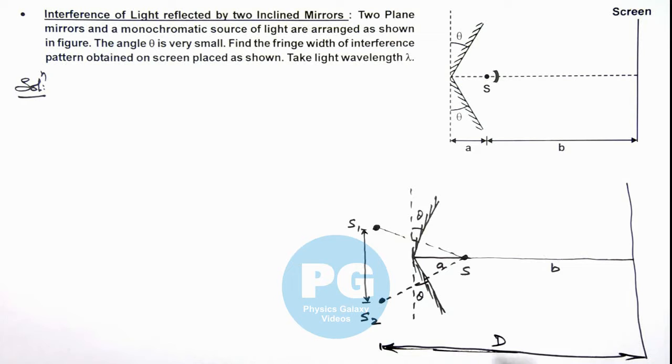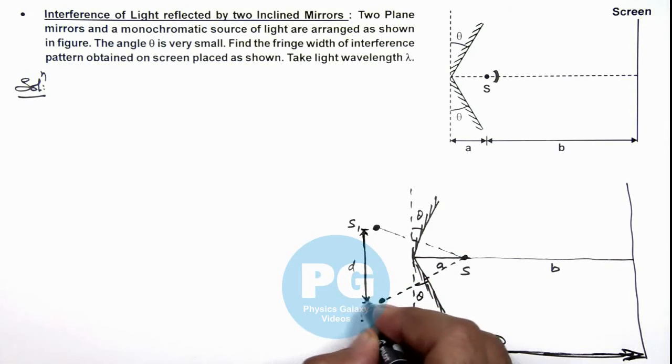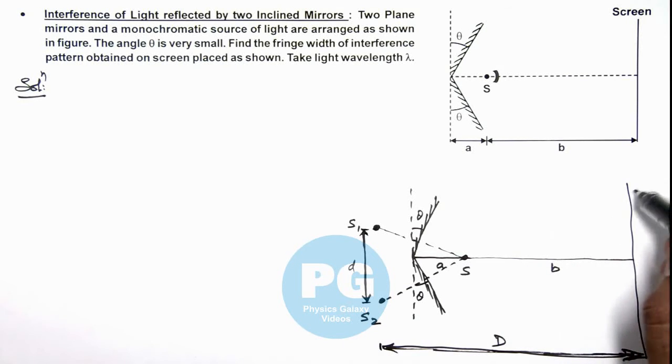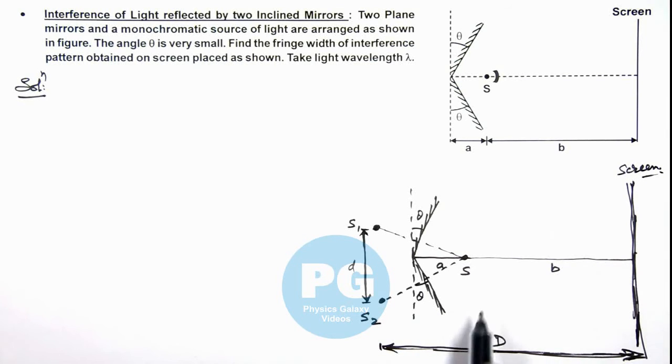So in this situation we can consider this as a limiting case of Young's double slit experiment in which we can say small d is the slit separation, capital D is the separation between slit plane and the screen. Now in this situation if we analyze the interference pattern on screen, first we need to calculate small d and capital D.